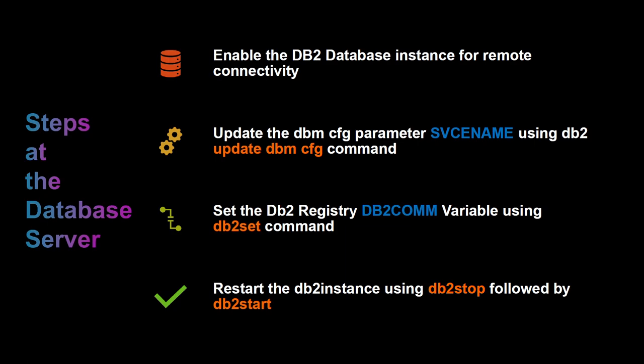Before we set up the client, we need to do some changes at the DB2 database server so the DB2 instance can communicate to the client. We need to make sure it is listening, and to do that we need to update two parameters. One is the database manager config parameter called service name, and another is the registry parameter called DB2COMM. We need to set the service name to the port value and DB2COMM to TCPIP using the DB2 SET command. Once done, we stop and start the DB2 instance. These are the only steps at the database server — a one-time configuration. Once done, the database instance is ready to accept connections from the client, and you can safely log off from the database server.